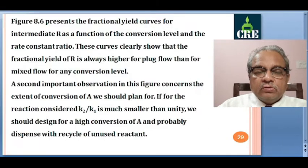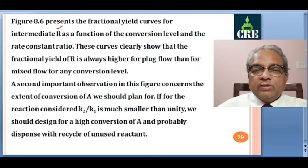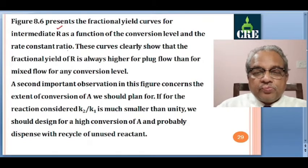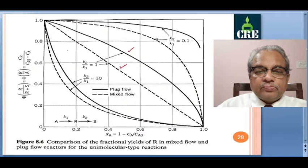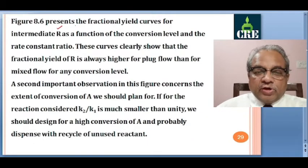Now we will discuss these profiles — fractional yield curves for intermediate R as a function of conversion level and rate constant ratio. These curves clearly show that the fractional yield of R is always higher for plug flow than for mixed flow for any conversion level. For any conversion level — whether K2/K1 = 1, 0.1, or 10 — plug flow gives a higher fractional yield than mixed flow for the reaction A→R→S when R is desired.